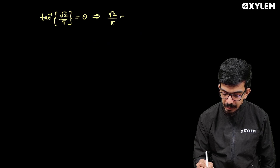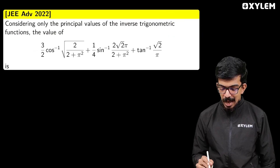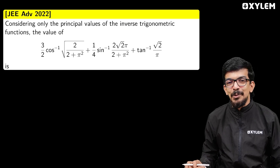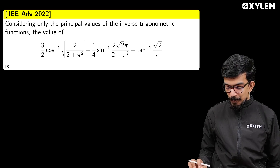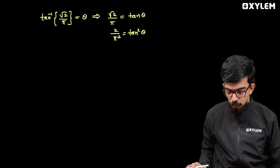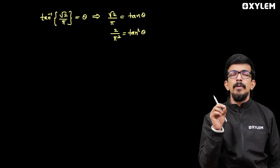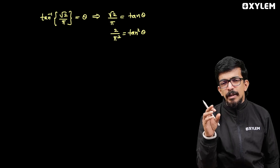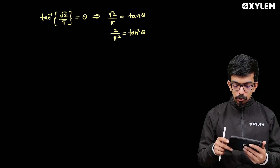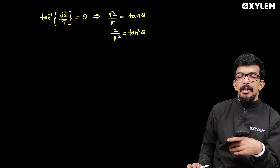So 2 divided by π is tan theta, and 2/π² is tan² theta. Let's assign the value: √2 is 1.414, π is 3.14. So √2 divided by π gives approximately 0.45.